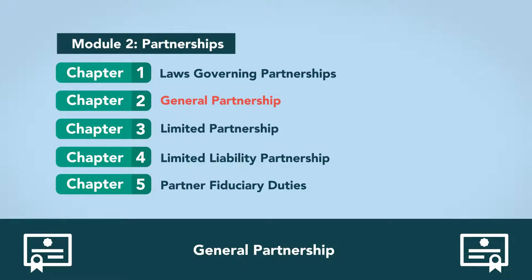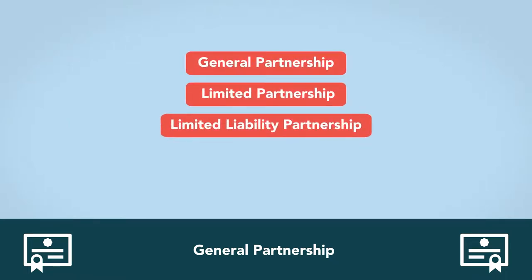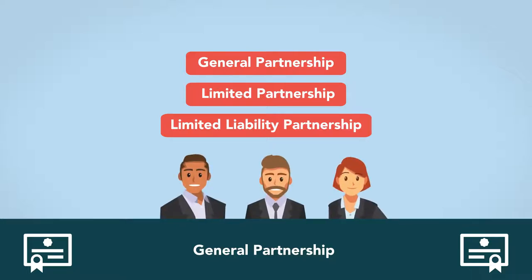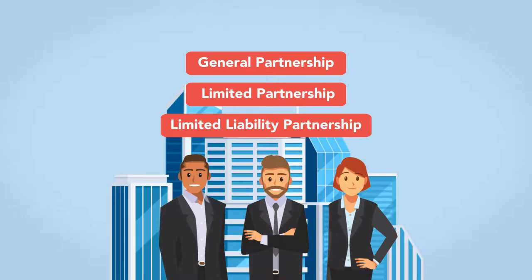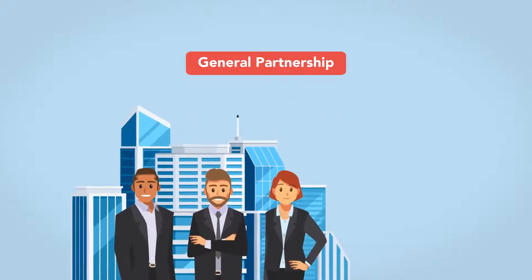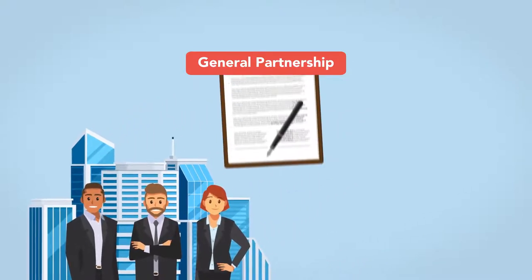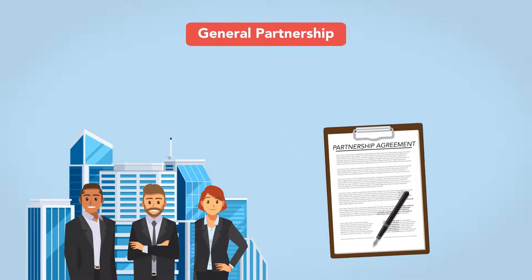The General Partnership. There are three types of partnerships: the General Partnership, Limited Partnership, and Limited Liability Partnership. When two or more people work with one another to co-own a business for profit, unless they specify otherwise, they form a general partnership. The only formal documentation necessary to create a general partnership is the partnership agreement.